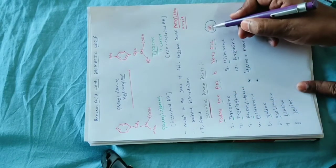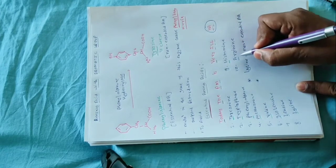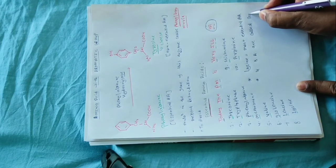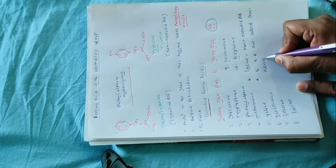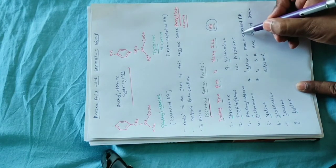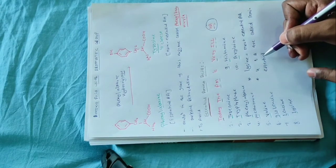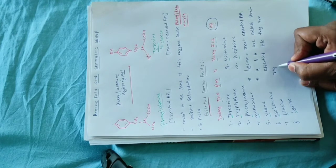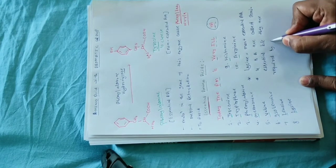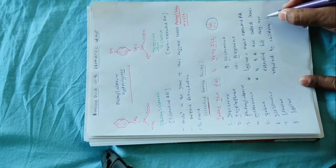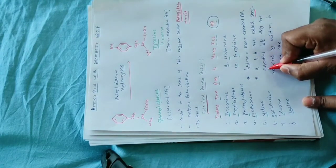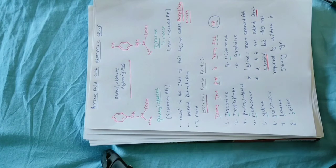Histidine और Arginine — यानि H और A — इनको semi-essential कहते हैं। Semi-essential का मतलब है कि यह पूरी life में नहीं, बल्कि half life के लिए required होते हैं। Because they are required by children in growing age — जब children की growing age होती है उस time पे इनकी requirement होती है, इसलिए इनको semi-essential कहते हैं। Next video में हम derivatives के बारे में बात करेंगे। Thank you for watching.